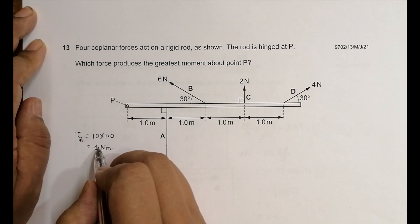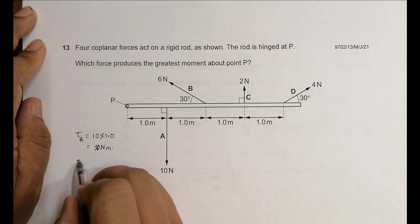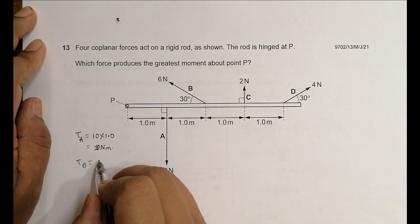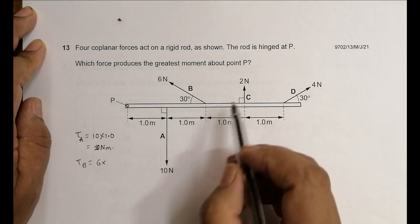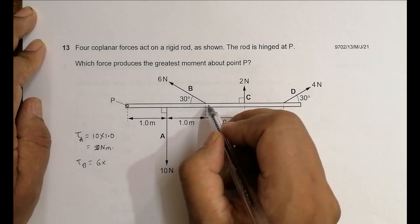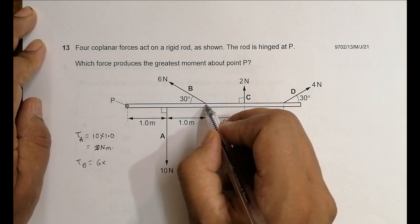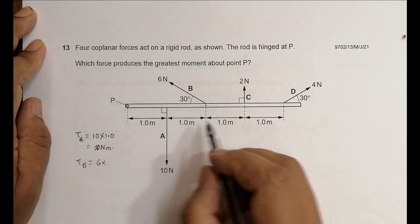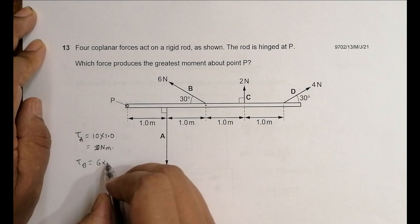Then I have to go for tau B. Tau B equals the force, which is 6, times R. R is the distance of the point of application of force from the fulcrum. So from here to here is 1, 1, it is 2. Into sine of the angle between the line of action of force and this R.